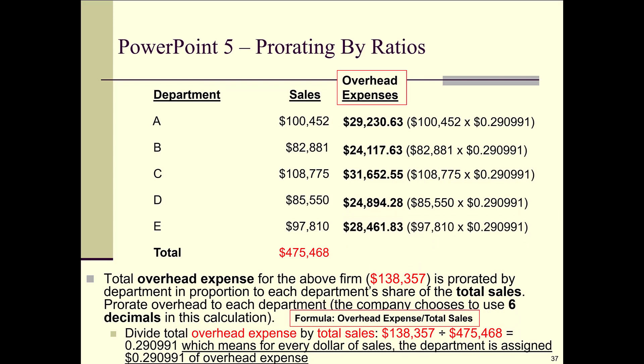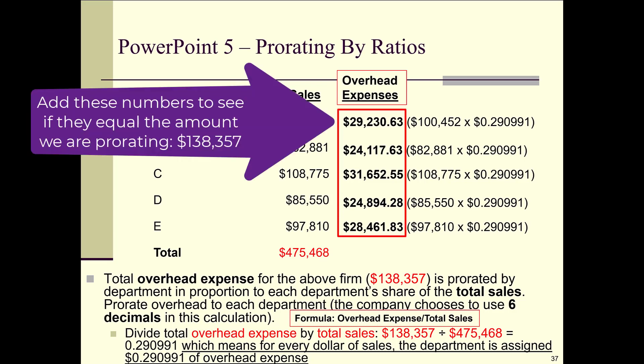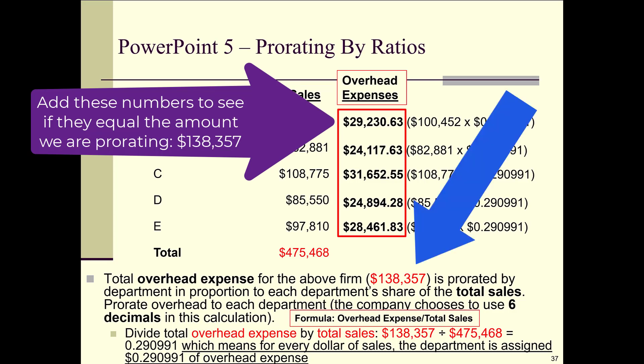Remember, the amount we are trying to spread out over all these departments is the total overhead expenses of $138,357. So we have to make sure that the overhead expenses we've just allocated — the numbers in bold — equal $138,357. Go ahead and add those up. Oftentimes you're going to be a few cents off due to rounding, so we'll have to fix that.